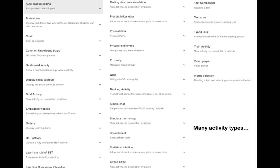We have a lot of different activity types — you could call them widgets or tools. Part of the reason is that Frog is a research platform, and we often build new tools for very specific experiments. For example, we have a melting chocolate simulation and a train ticket buying simulator used in a class on interface design. A big part of our goal was to make it as easy as possible for other labs to quickly experiment with rich collaborative activity types, and that guided how we designed our APIs.